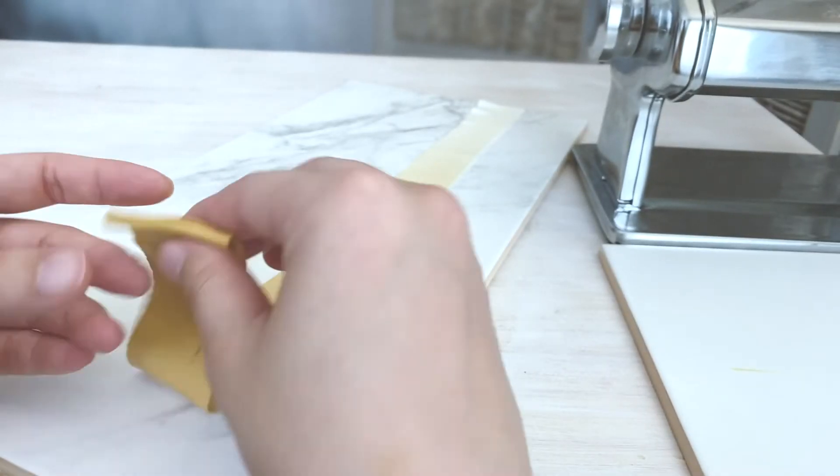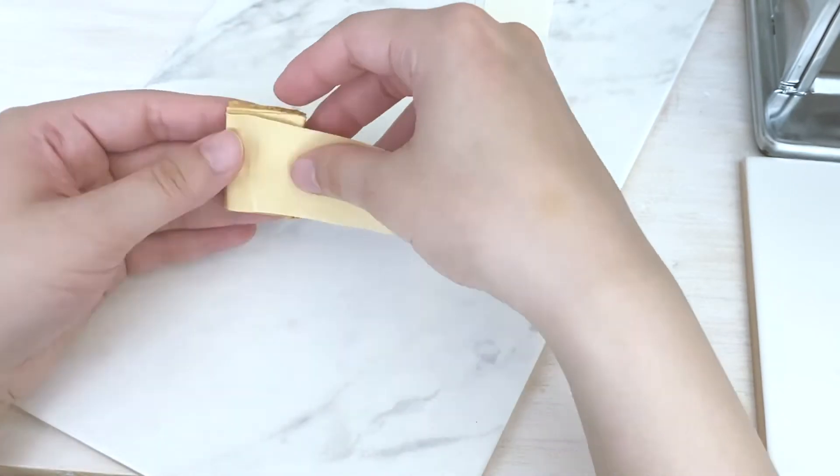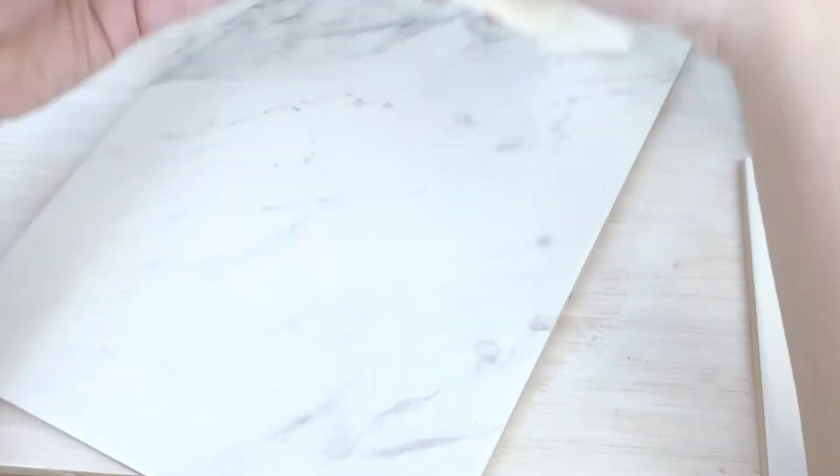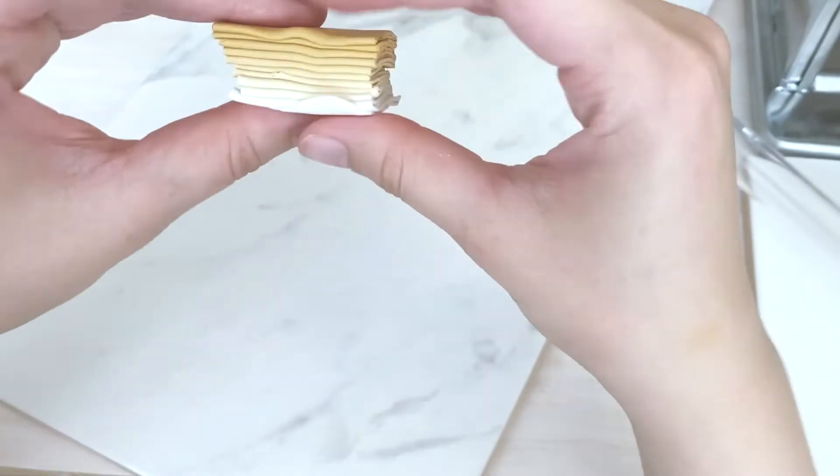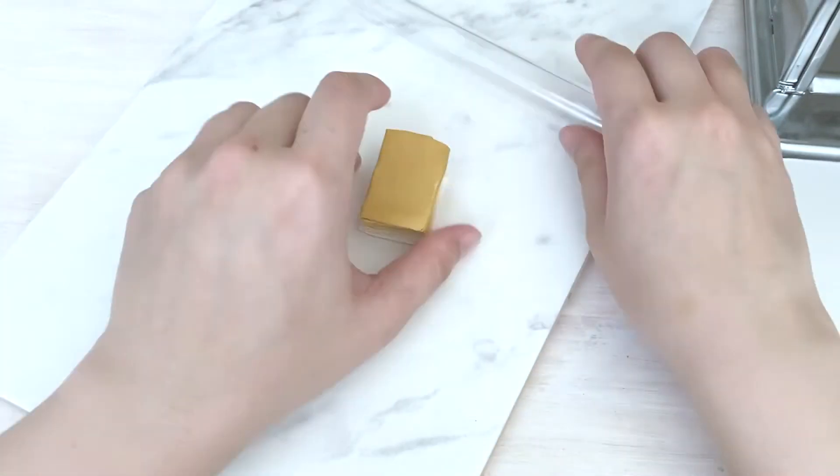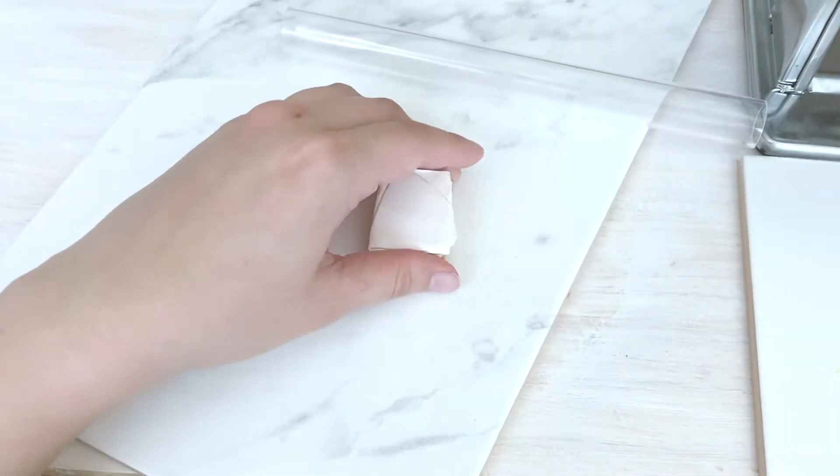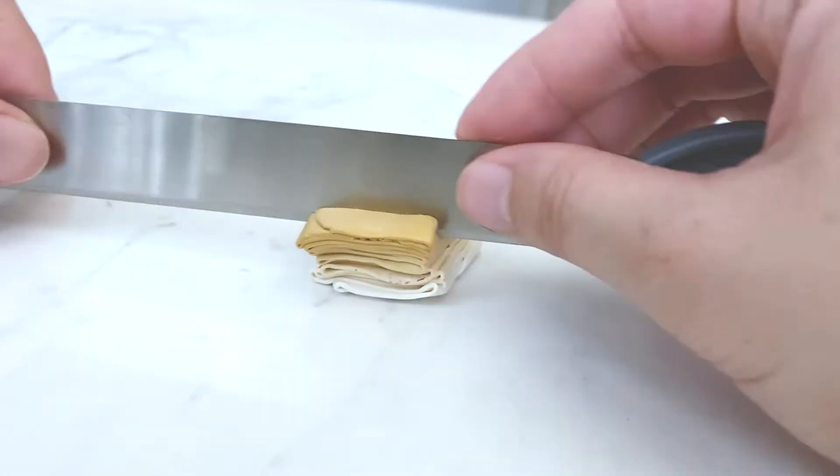Fold the clay back and forth like an accordion in one and a half to one inch wide intervals. Do not press the clay together too firmly while doing this. Once the clay has been completely folded, gently compress the stack together with your fingers or an acrylic roller to remove any air pockets.